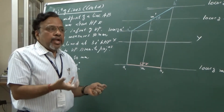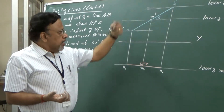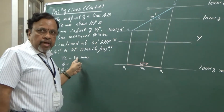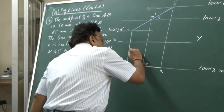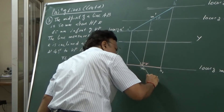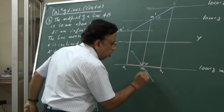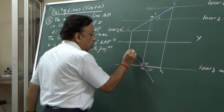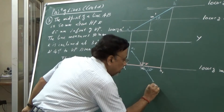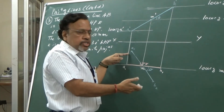Stage 2: consider the line inclined to VP and parallel to HP. Now the true length is 80 mm and the inclination is 40 degrees to VP. I will draw a line through M at 40 degrees, taking 40 mm each side. This gives A2 and B2 in the top view. Since the line's inclination to VP is fixed here, I draw horizontal lines through A2 and B2 to get the locus of A and locus of B.